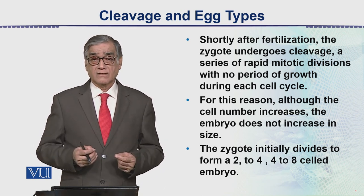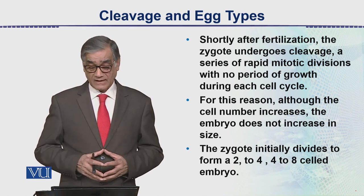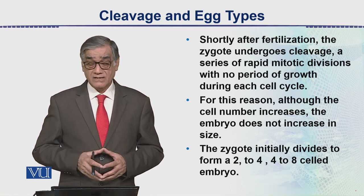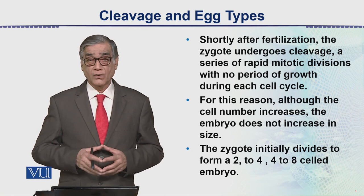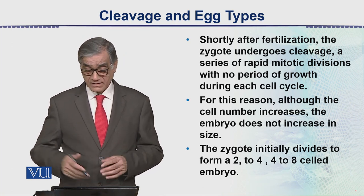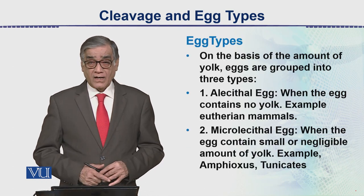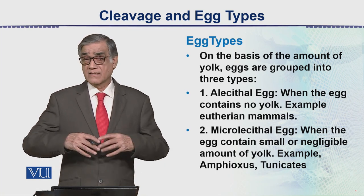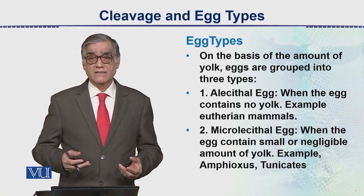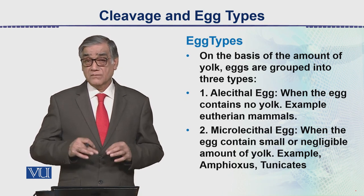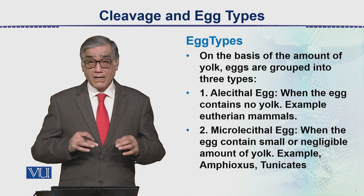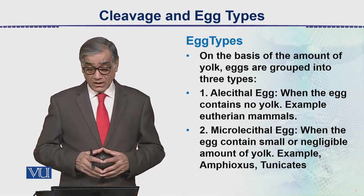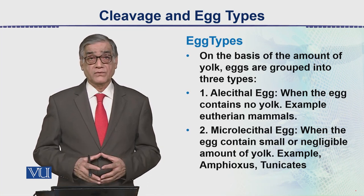The overall size does not increase in early embryological stages. The zygote initially divides to form 2, 4, 8, or 16 cell stages in the embryo. Now, eggs are not always alike — there are different types of eggs. We can classify them in terms of the amount of yolk and the placement of yolk. On the basis of the amount of yolk, eggs are grouped into different types.